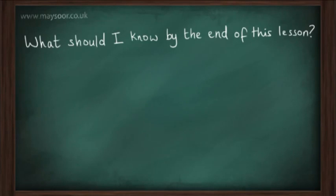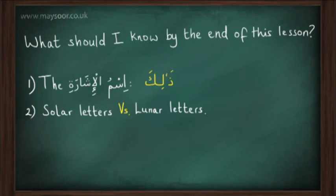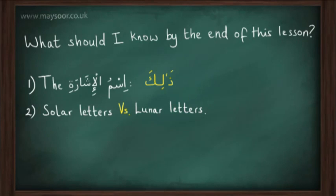In today's lesson, we're going to be looking at number one, the ism ul-ishara thalika and the conditions for its use. Number two, al-huroofu al-shamsiyya, also known as the solar letters or sun letters, versus al-huroofu al-qamariya, also referred to as the lunar letters or moon letters.